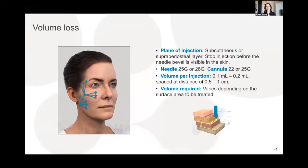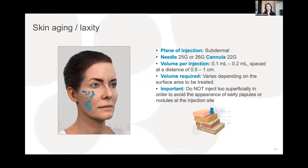For volume loss, injection targets the subcutaneous or super-periosteal plane. Stop injecting as the needle comes out to avoid leaving a clump of particles at the entry point. For skin aging and laxity, a subdermal injection is preferred. Sculptra performs well for fine lines, creepy skin, and tissue laxity. The sub-malar region is especially suited for hollowed athletes or petite-faced patients without over-volumizing.